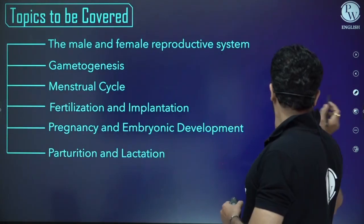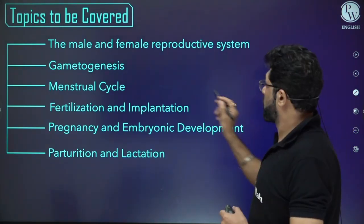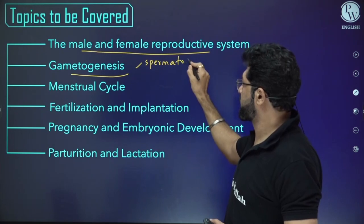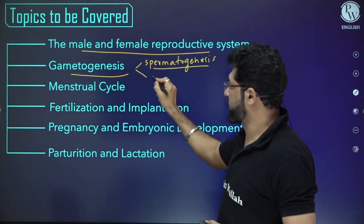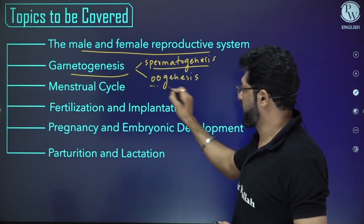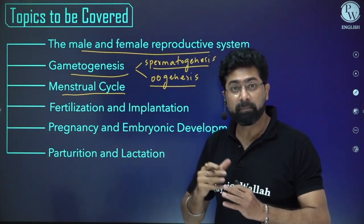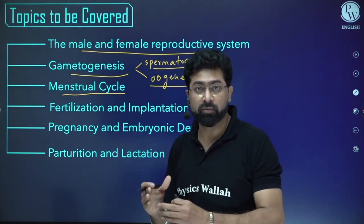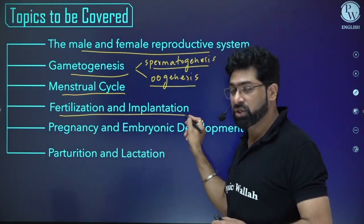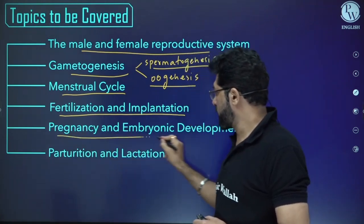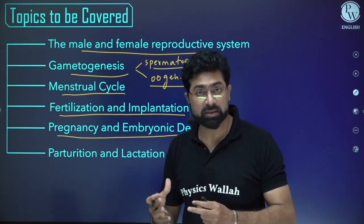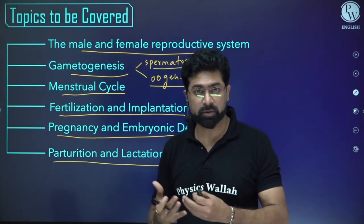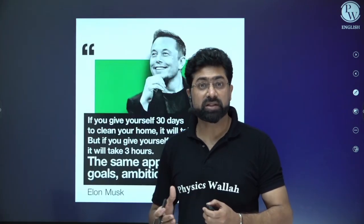Today we'll be talking about the male and female reproductive systems in detail. Next, we'll discuss gametogenesis — spermatogenesis in males and oogenesis in females. Then we'll cover the menstrual cycle, which is very important as many questions have come from this topic recently. After that, fertilization and implantation, pregnancy and embryonic development, including cleavage, morula, and gastrula stages. Finally, we'll cover parturition and lactation.